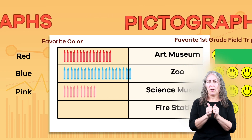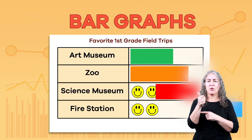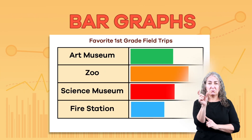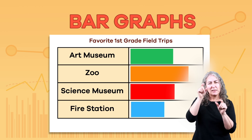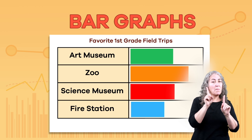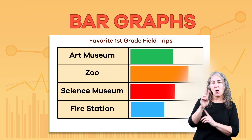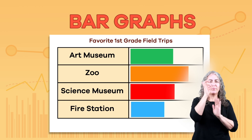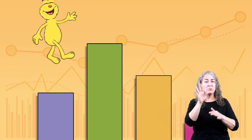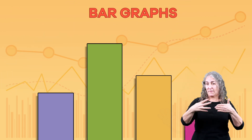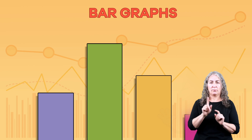Let's move on to another type of graph: bar graphs. This bar graph is giving us the same information as the pictograph, but it uses bars instead of pictures. Now, let's create another type of bar graph where the bars are facing the other way.